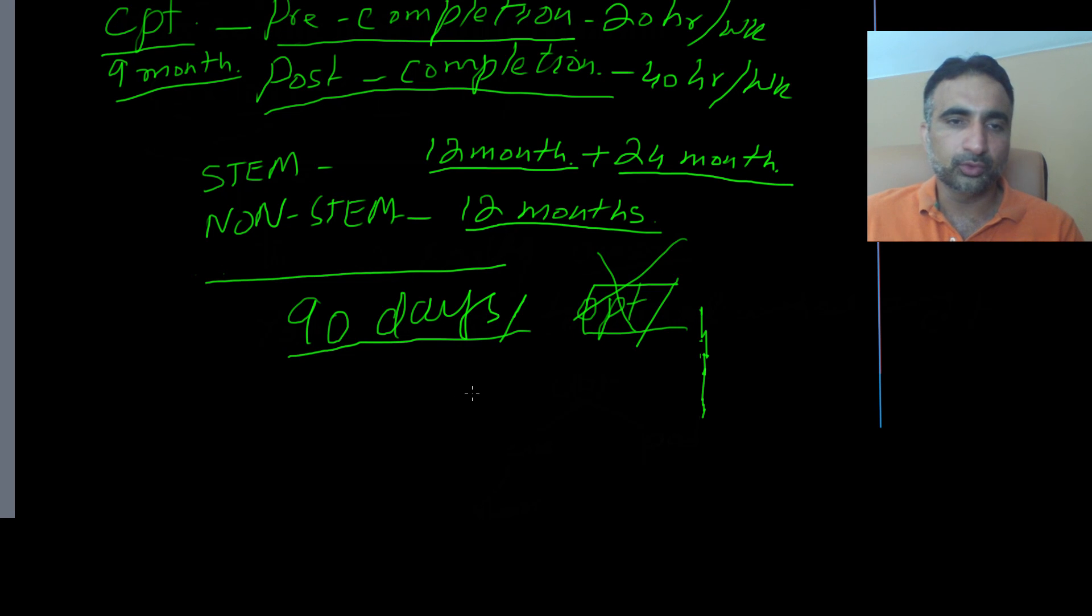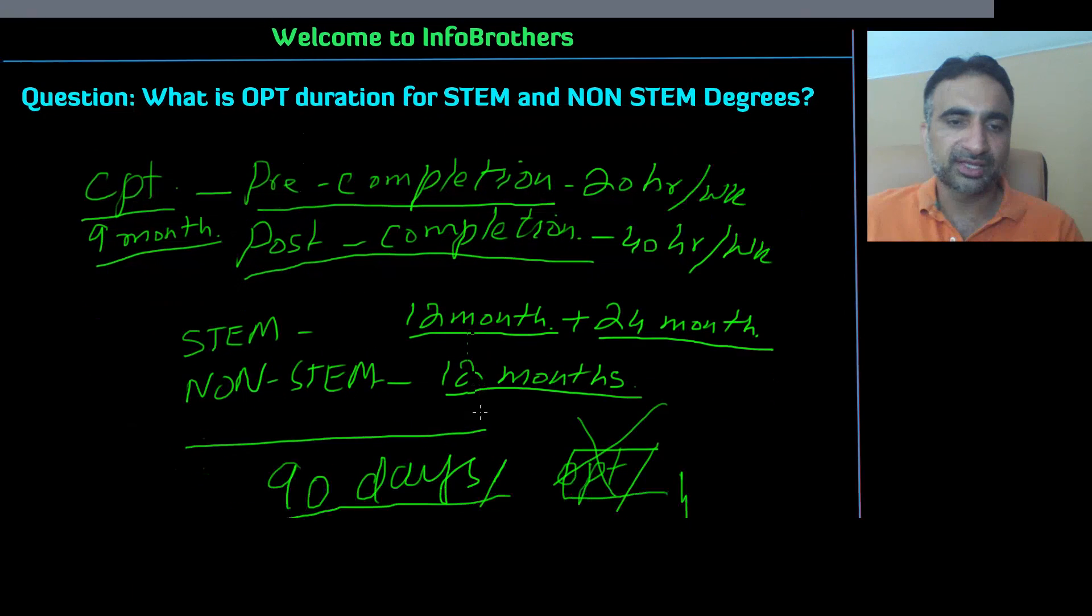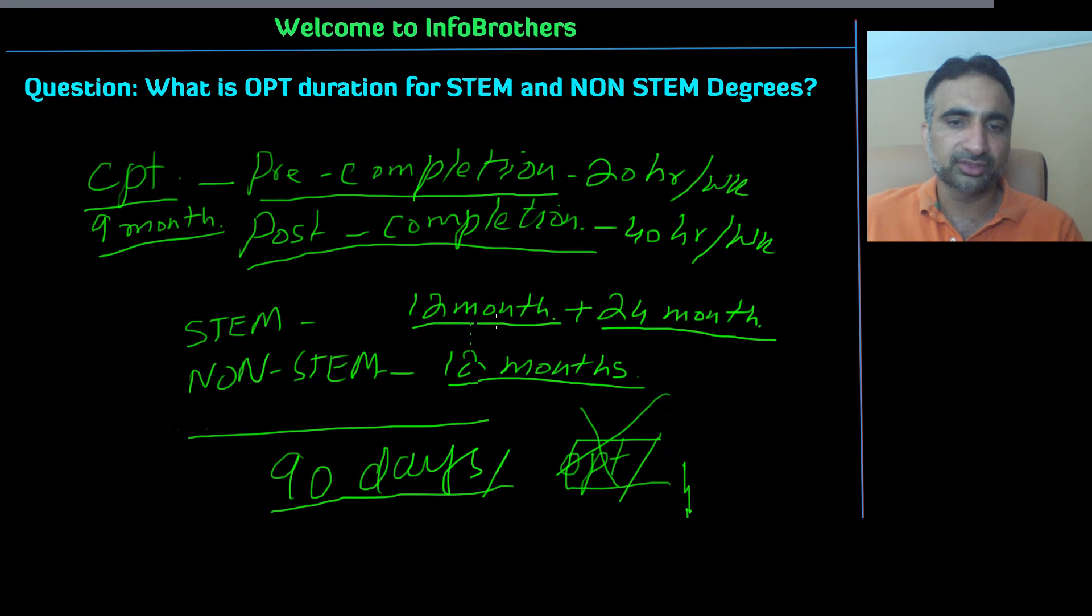Thanks very much and I hope this video will help you guys to understand what is the total duration. So we understand total duration for STEM degrees that's starting 12 months plus the 24 months extension and with the non-STEM, it is always 12 months. I hope you all the best from converting from your OPT to H-1B visa and I will see you guys in the next video.